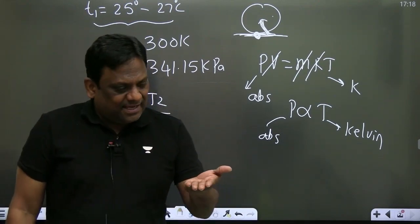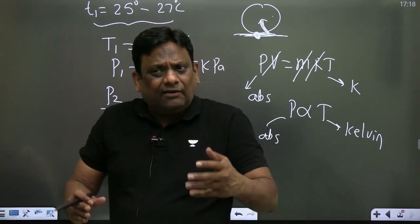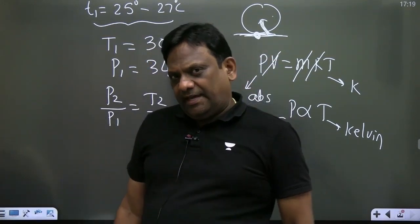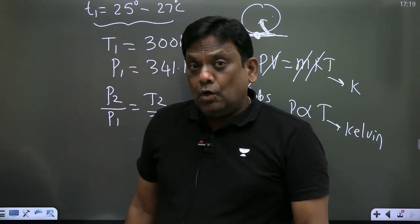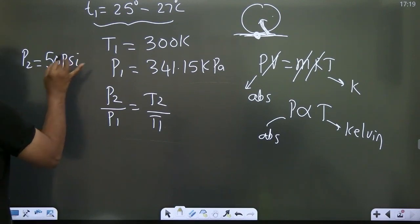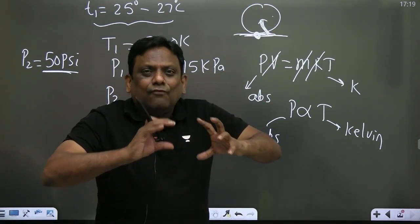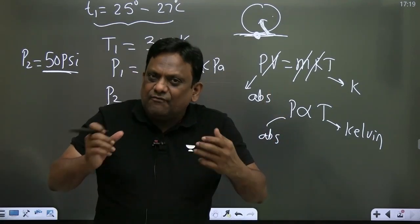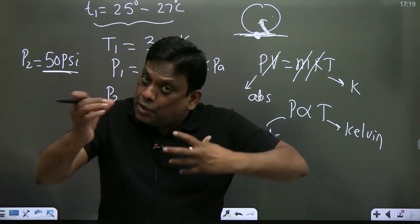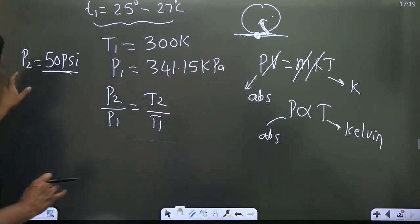When it is continuously moving say for example two and a half to three hours, recently one person has analyzed this and he took pressure gauge with him and checked the pressure gauge after two and a half hours of journey. To his surprise he found the final pressure as some 50 PSI. The original pressure was 35. There is continuous heat transfer to air and you know the volume is constant. Due to continuous absorption of that frictional heat, the collisions will increase. Molecular kinetic energy increases. Pressure is nothing but representative of number of collisions per second. After two and a half hours he found the final pressure to be 50 PSI.